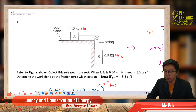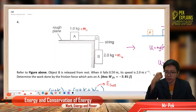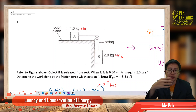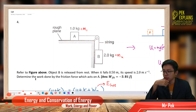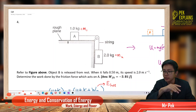Refer to the figure above. Object B is released from rest. When it falls 0.5 meter, its speed is 2 meters per second. That means it falls, losing the gravitational potential energy but gaining the kinetic energy. Determine the work done by the friction force which acts on A. Apparently block A is placed on a rough plane, so it has energy loss due to friction.